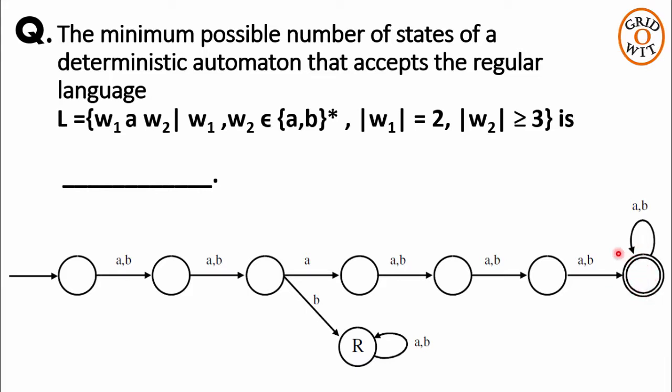But in w2 we have at least three symbols given in the question, which means we can have more number of symbols after reading three symbols. And the machine should stay on the final state if more symbols occur.